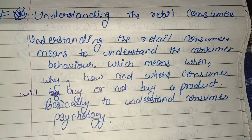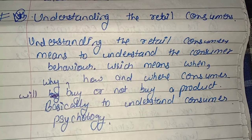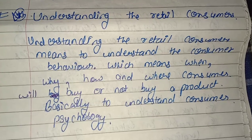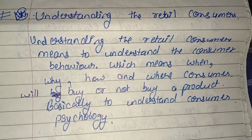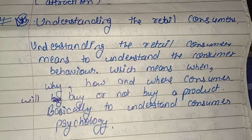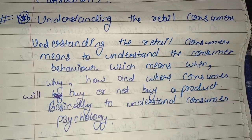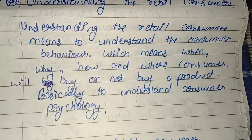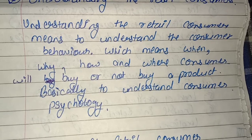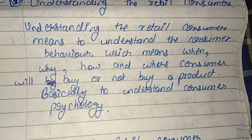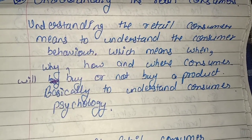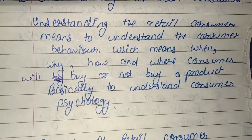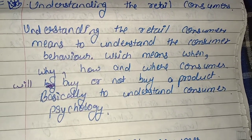The first topic from Unit 1 Part 2 is understanding the retail consumer. When we talk about retailing, understanding the consumer is very important because the retailer has direct contact with the consumer, while the manufacturer does not. Understanding the consumer means understanding consumer behavior — when, why, how, and where the consumer will buy or not buy a product — basically understanding consumer psychology.